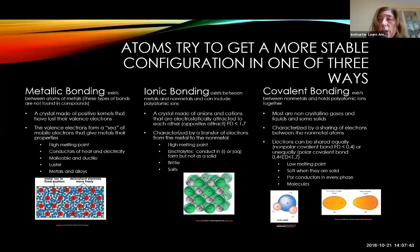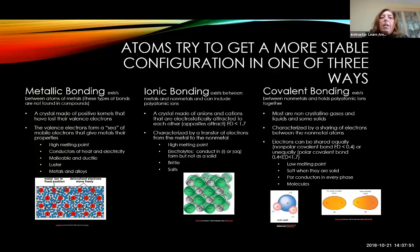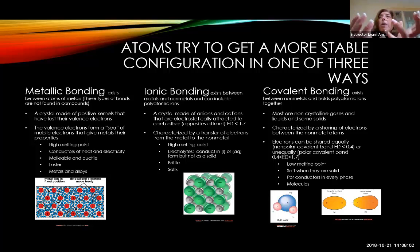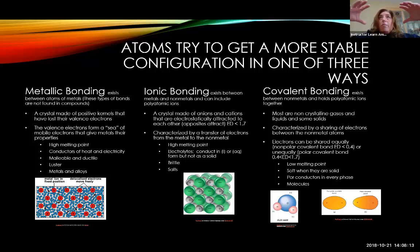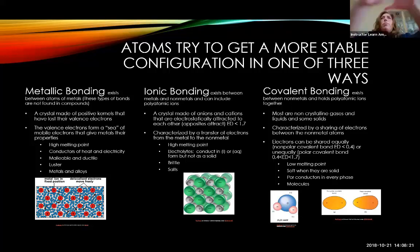There are three ways to get what you want if you're an atom: metallic bonding, ionic bonding, and covalent bonding. Metallic bonding exists only between atoms of metals — either a single metal like an iron nail, or a group of metals that have been mixed, such as brass, bronze, or 14-karat gold.